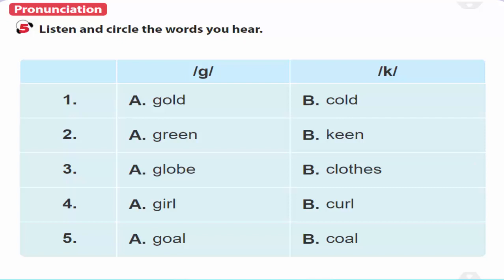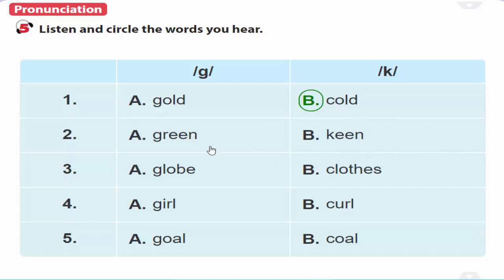5. Listen and circle the words you hear. Unit 3, Page 29. A closer look 1. Activity 5. Listen and circle the words you hear. Cold. Green. Clothes. Girl. Goal.